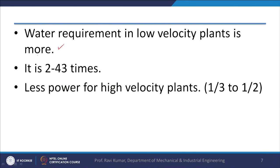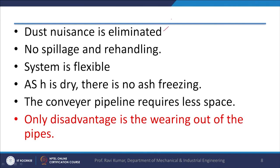Water requirement in a low velocity plant is higher — 2 to 3 times that required for mechanical handling. For a high velocity plant, less power is required, approximately 1/3 to 1/2. In the air (pneumatic) system, dust nuisance is eliminated, no spillage, the system is flexible, ash is dry, and there is no ash freezing. The conveyor piping requires less space since only air and ash need to be handled.